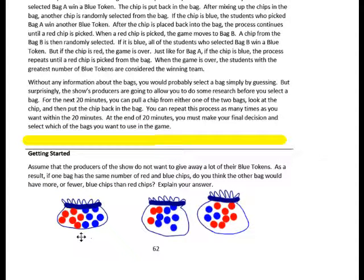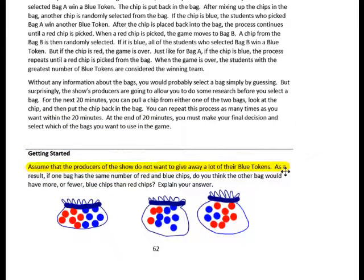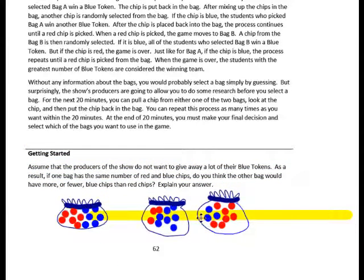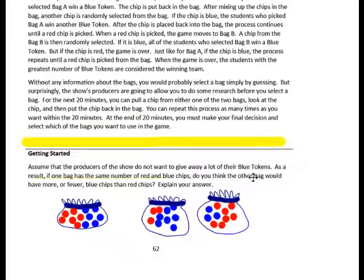We know that one of the bags will have an equal amount of red and blue tokens. The other bag either has a lot of blue tokens or a few blue tokens. The question is asking: assume the producers do not want to give away a lot of their blue tokens — would the other bag have a lot of blue tokens or a few blue tokens? Pause a moment, think about that, and write your answer.